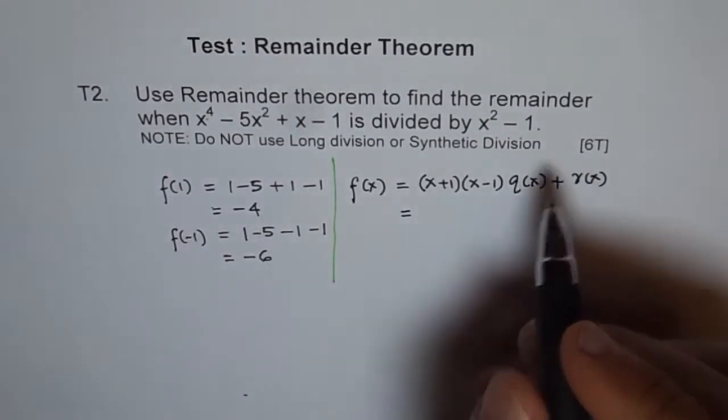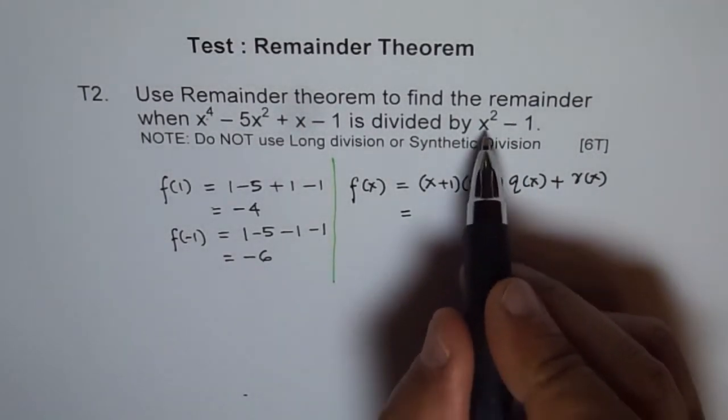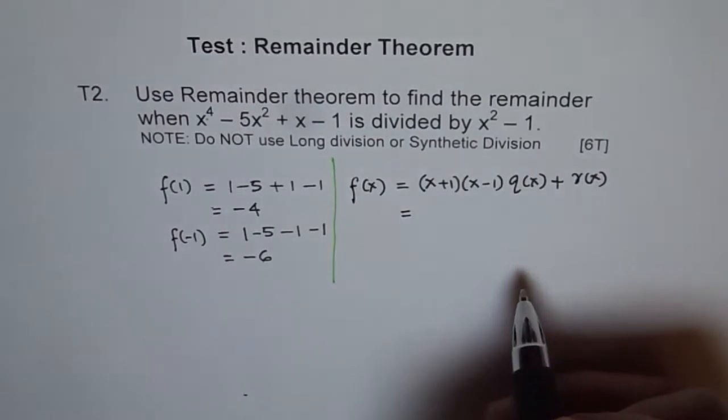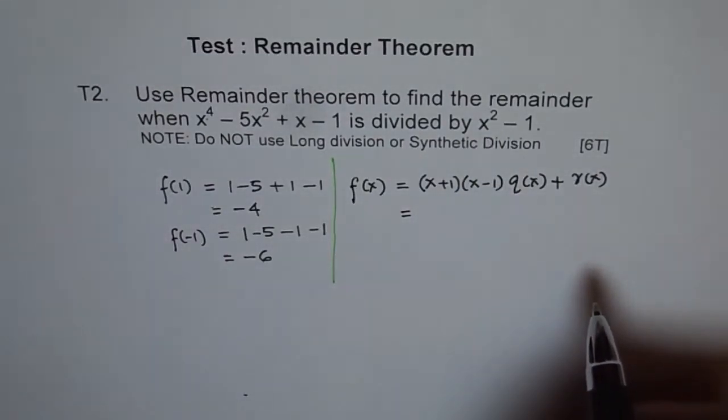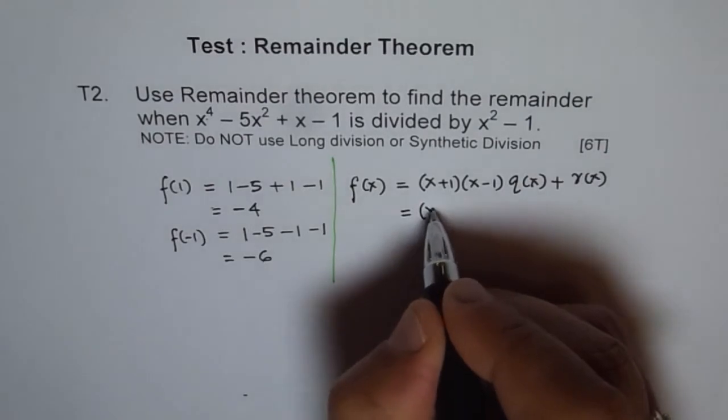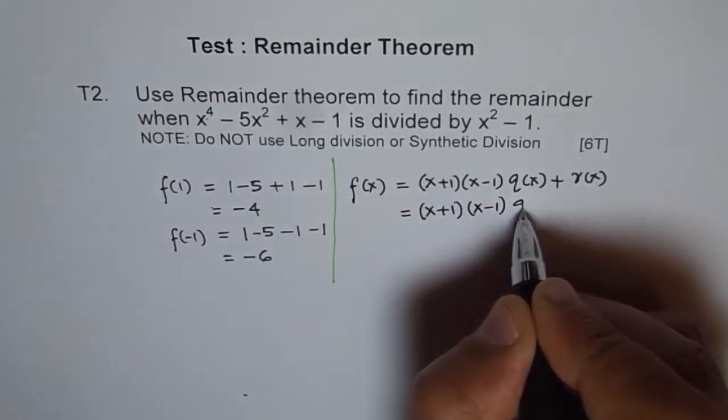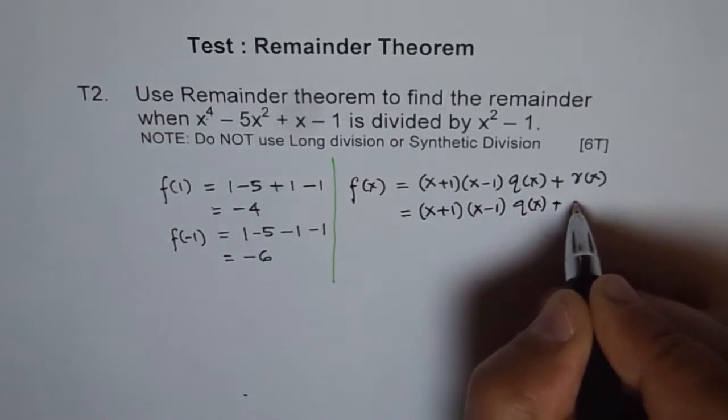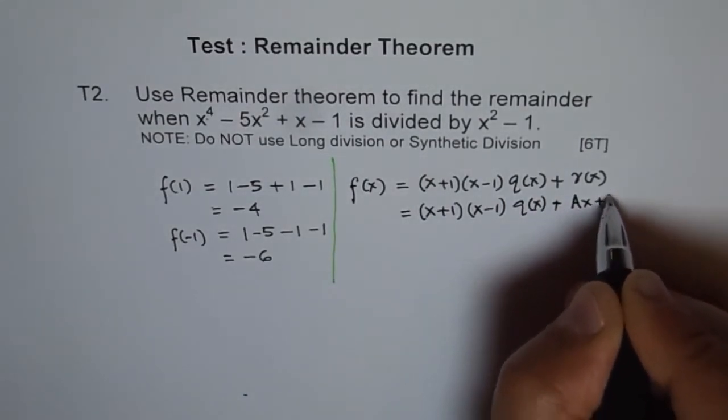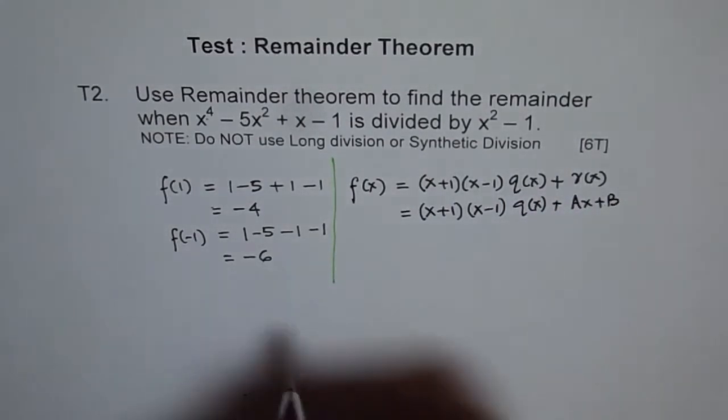Since divisor is of degree 2, remainder should be linear. So let us assume that our remainder is ax plus b. We will find the remainder. Plus ax plus b, that is our remainder in general.